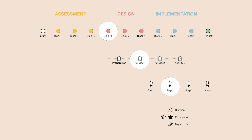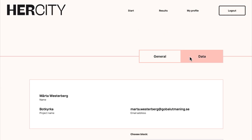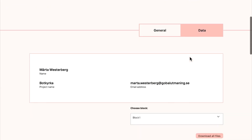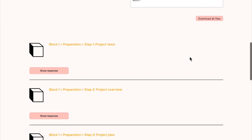As a guidance, the majority of the toolbox is intended for the project team. When girls and stakeholders are participating, the activity is marked with a white star. And when they are the main users of a tool, it's marked with a black star. You can access your data at any time by clicking on Results.